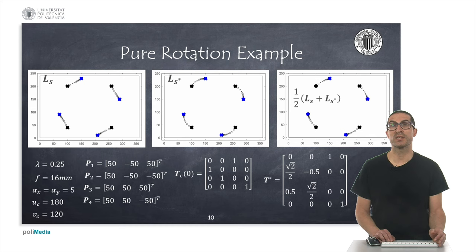This transformation matrix is used to generate the reference points in the image that are represented with the blue crosses. As you can see, the task consists of reaching a reference position with a rotation in the Z axis of the camera.